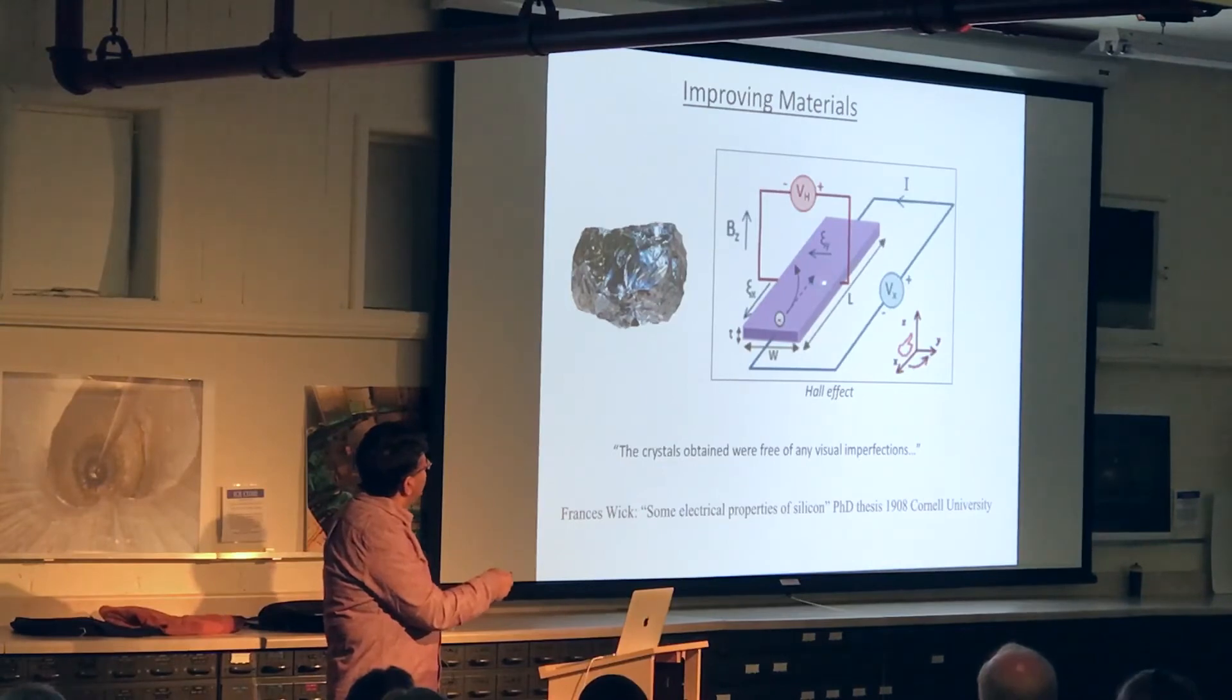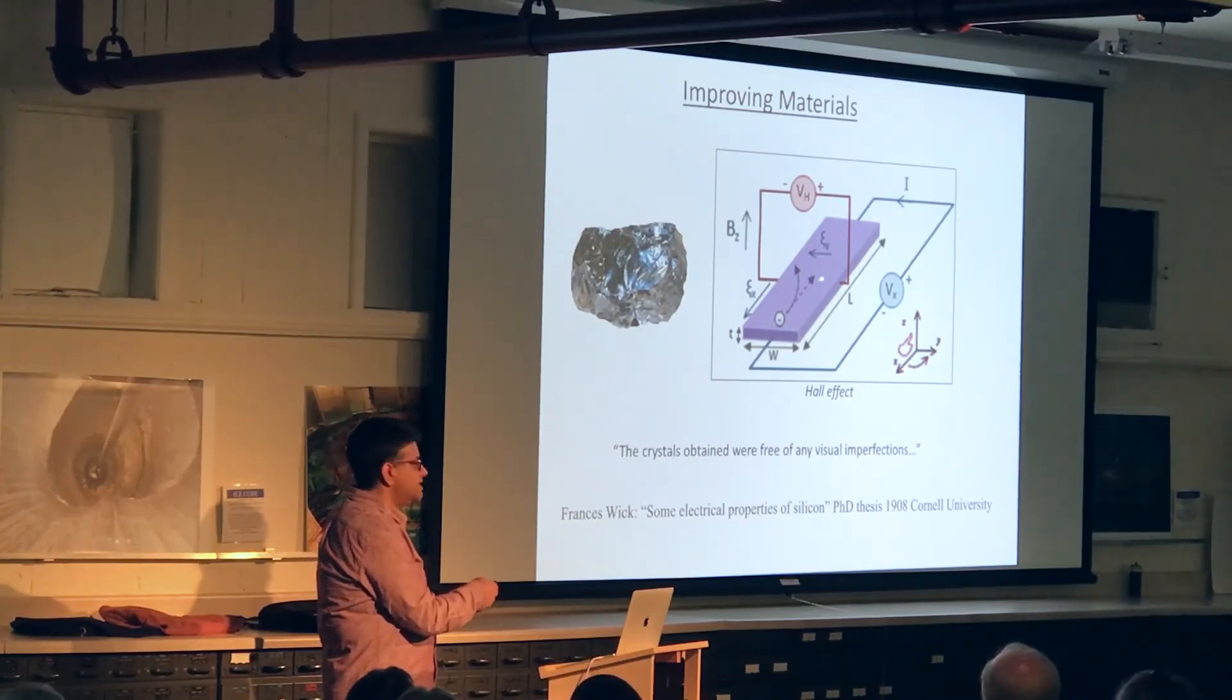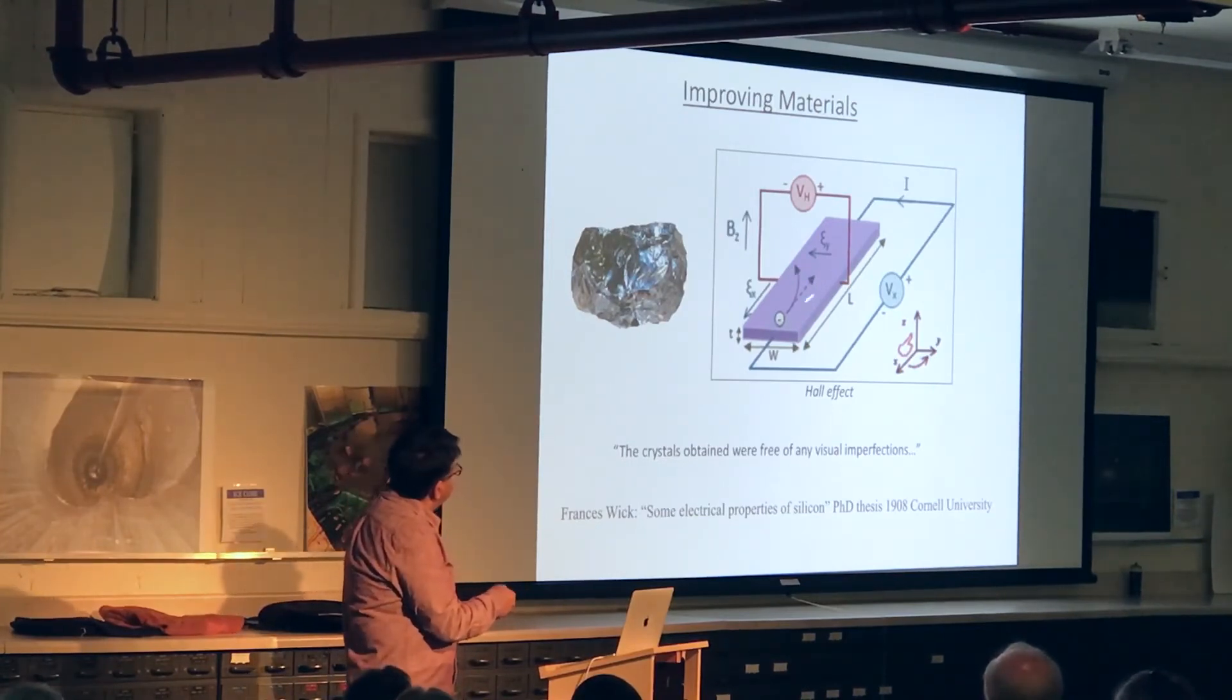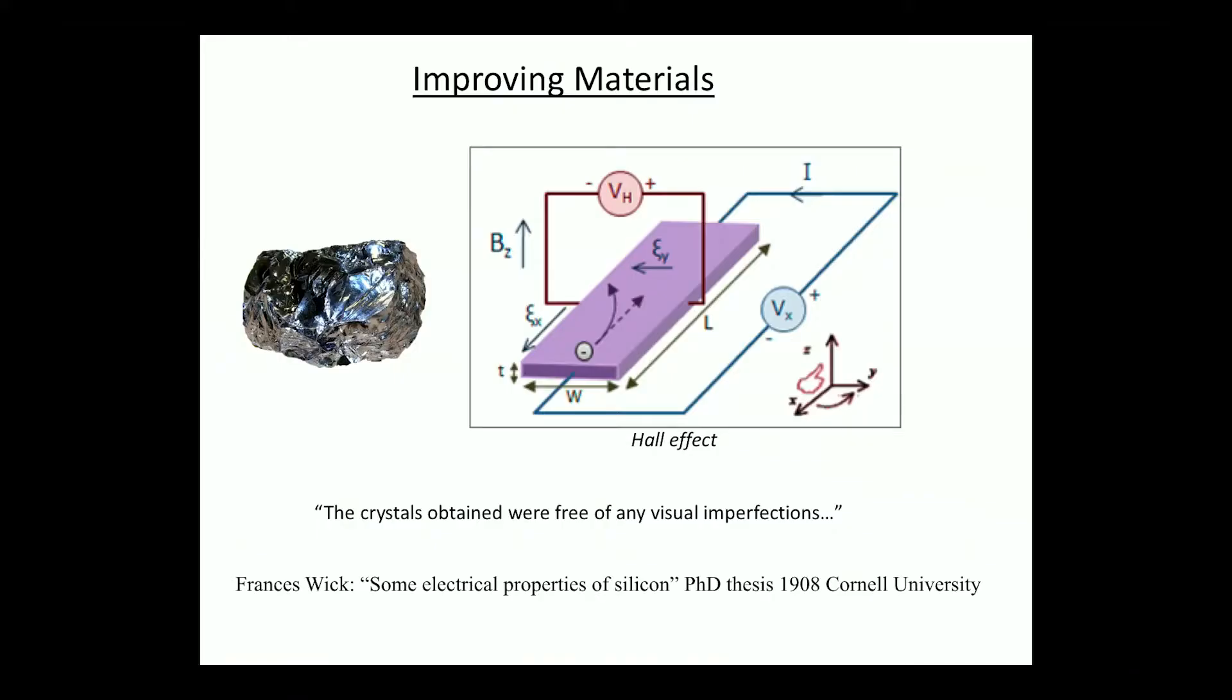Now imagine that you have a magnetic field that is perpendicular to the sample. So it points up and down. If you have such a magnetic field, then basic physics tells you that an electron which is moving in this direction, when it sees a magnetic field, starts to get bent. This is called the famous Lorentz force. And the electron instead of going straight starts to accumulate on one side of the sample. When you have more electrons on one side of the sample versus the other, it's as if your sample is a little battery. So it develops a little voltage. And this voltage is called a Hall voltage.